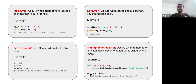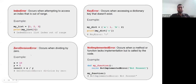We also have the key error, which occurs in dictionaries when you are querying for a key that does not even exist. Similarly, we also have the zero division error — as the name says, if you are dividing by zero, you will get an error since division by zero is not possible.